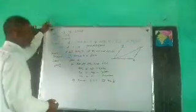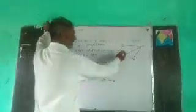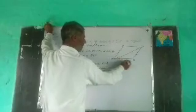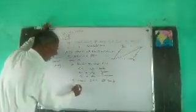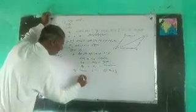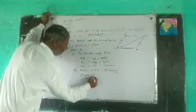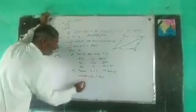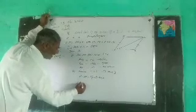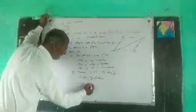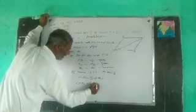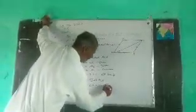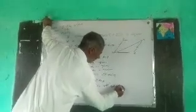When these two triangles are congruent, we can say that angle BAC is equal to angle ACD. These are alternate interior angles.